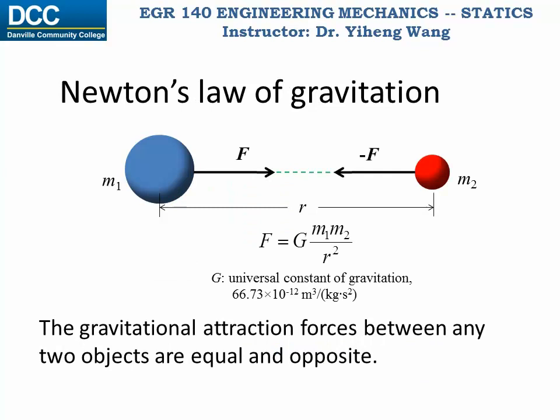Lastly, let's look at Newton's law of gravitation. Attractive force exists between any two objects with mass. As you can see from this equation, this force is proportional to the masses of the objects M1 and M2 and inversely proportional to the second order of the distance between them, r.